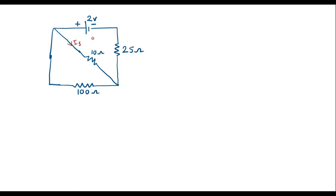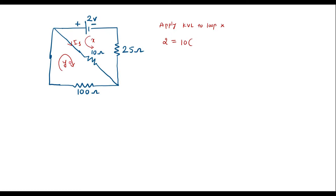Assume that the current through this loop is X and the current through this loop is Y. Applying KVL to loop X, I can write: 2 equals the voltage drop across the 10 ohm resistor, which is 10 times (X plus Y), plus 25X. Simplifying: 2 equals 10X plus 25X which is 35X plus 10Y. I will call this equation 1.